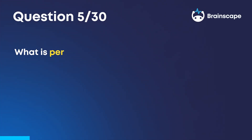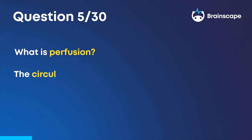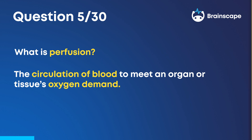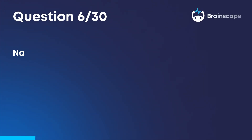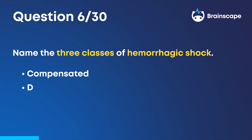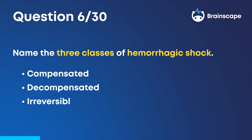Question 5. What is perfusion? The circulation of blood to meet an organ or tissue's oxygen demand. Question 6. Name the three classes of hemorrhagic shock. Compensated, decompensated, and irreversible.